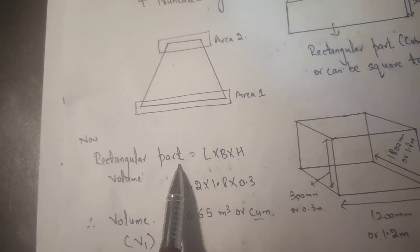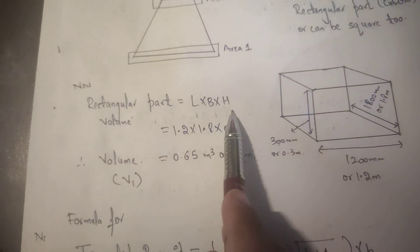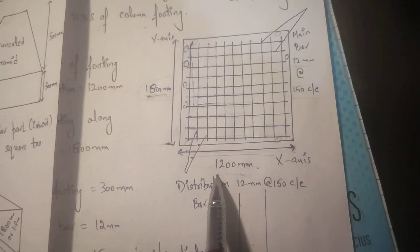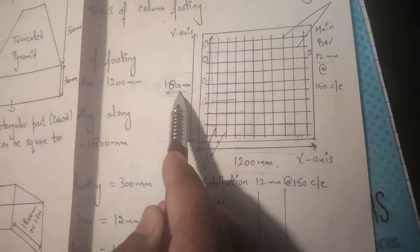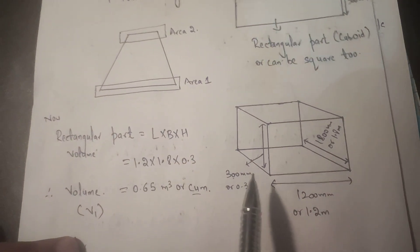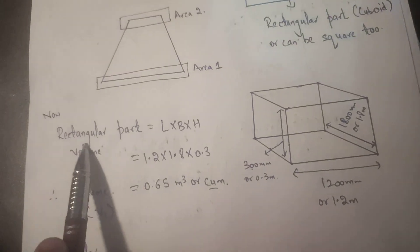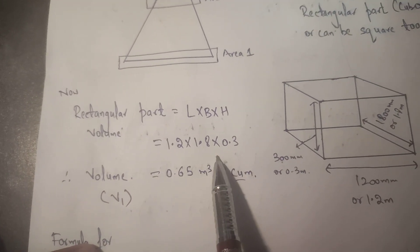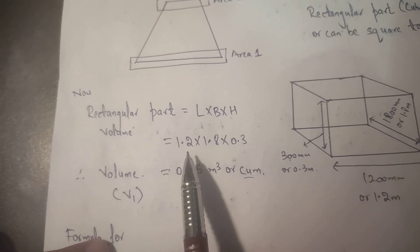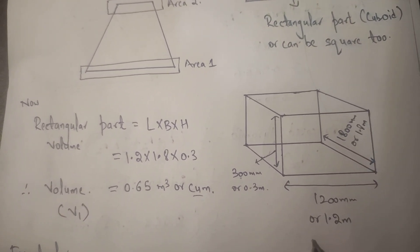Now we calculate the volume of the rectangular part first, using the formula: length × breadth × height. In the previous video I took length equal to 1200mm, width equal to 1800mm, and thickness of the foundation equal to 300mm. So the rectangular part volume equals 1.2 × 1.8 × 0.3 (converting to meters).